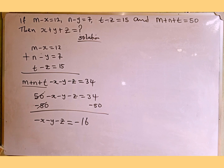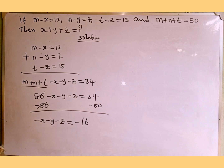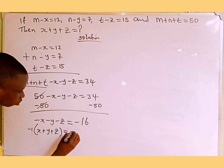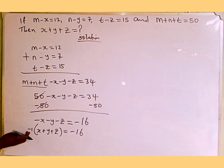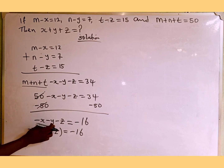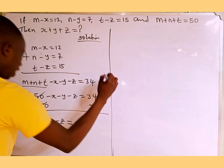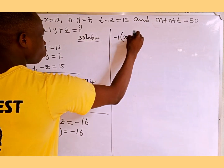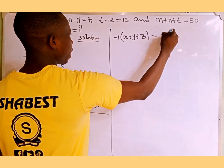The next thing we do is factor out the common factor. We notice that minus 1 is common, so we factor out minus 1 and open the bracket, giving us minus 1 times the quantity x plus y plus z equals minus 16. Dividing both sides by the coefficient minus 1 will isolate x plus y plus z.